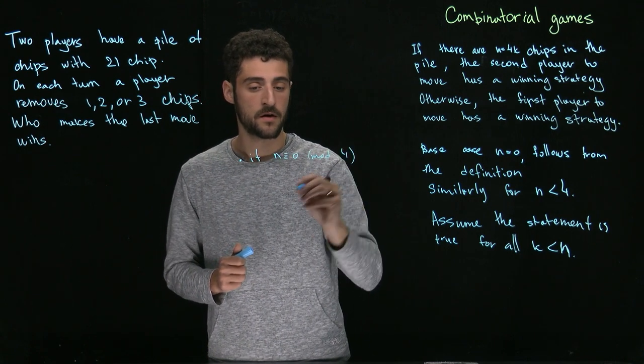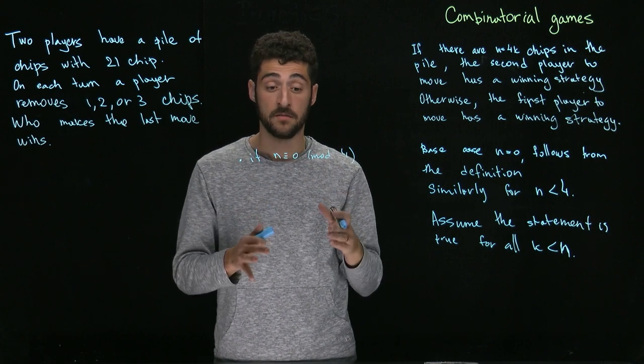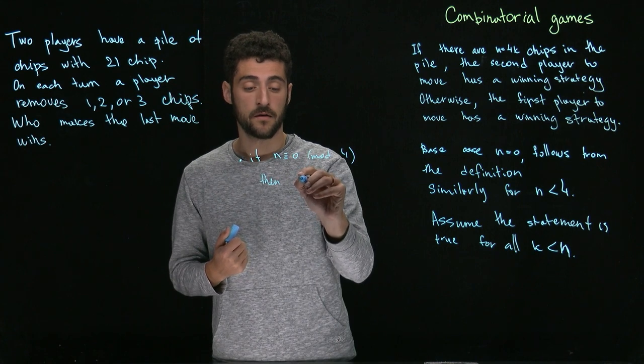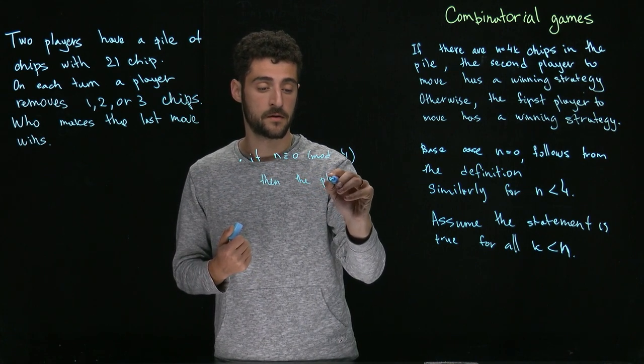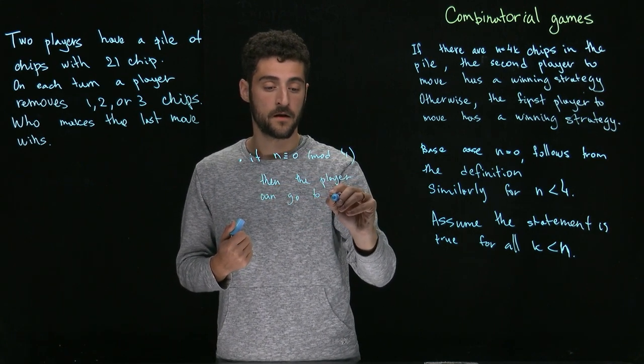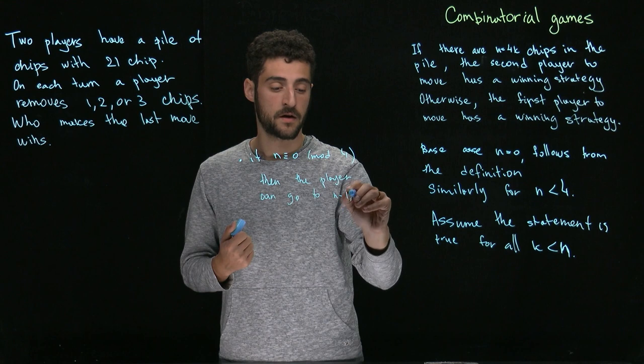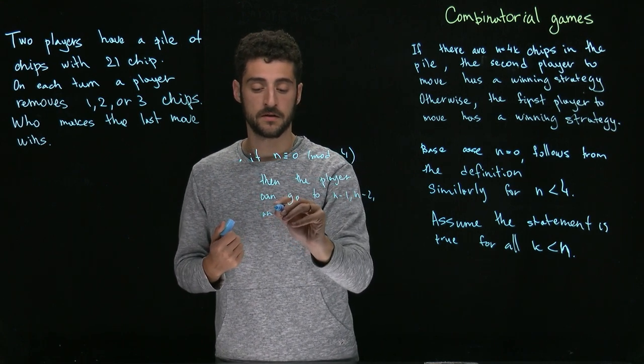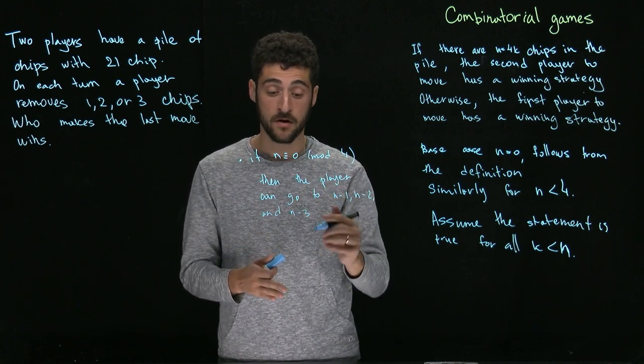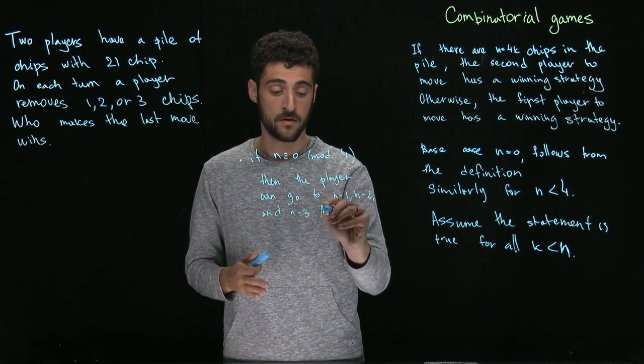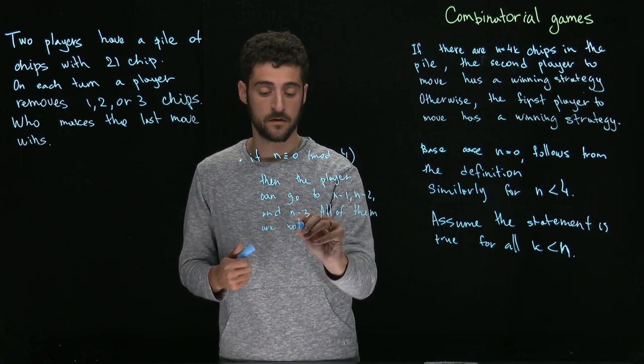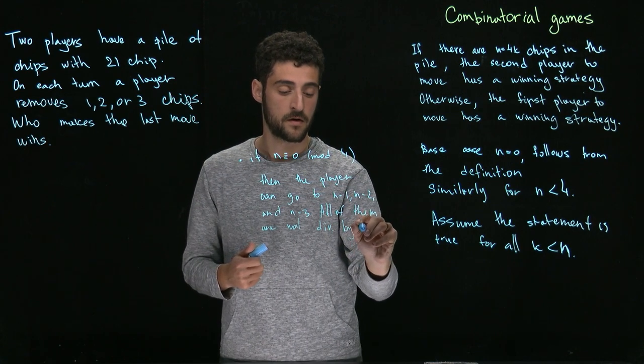In other words n is divisible by 4. Then the player can go to n minus 1, n minus 2, and n minus 3. All of these three numbers are not divisible by 4.